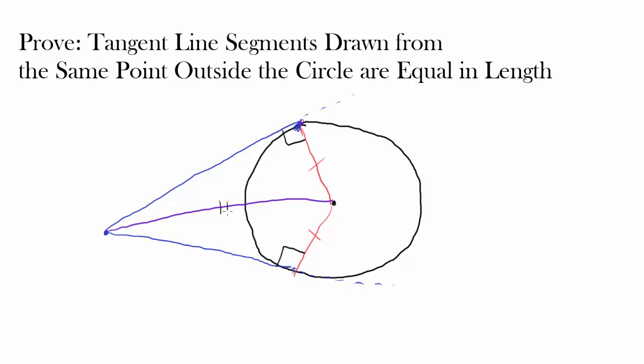And you have this hypotenuse being the same for both triangles. So you have hypotenuse-leg congruence. You have a hypotenuse, this purple line, and you have a leg, this red line. And since they are the same, you know these two triangles are congruent.